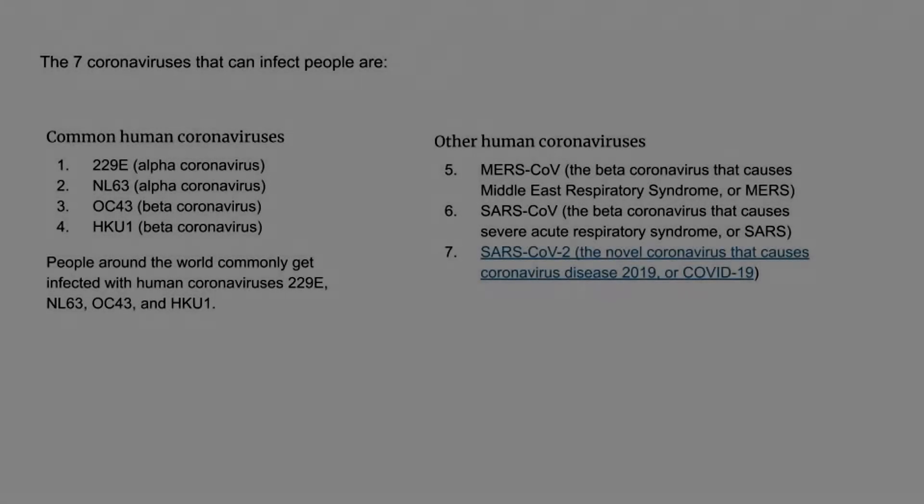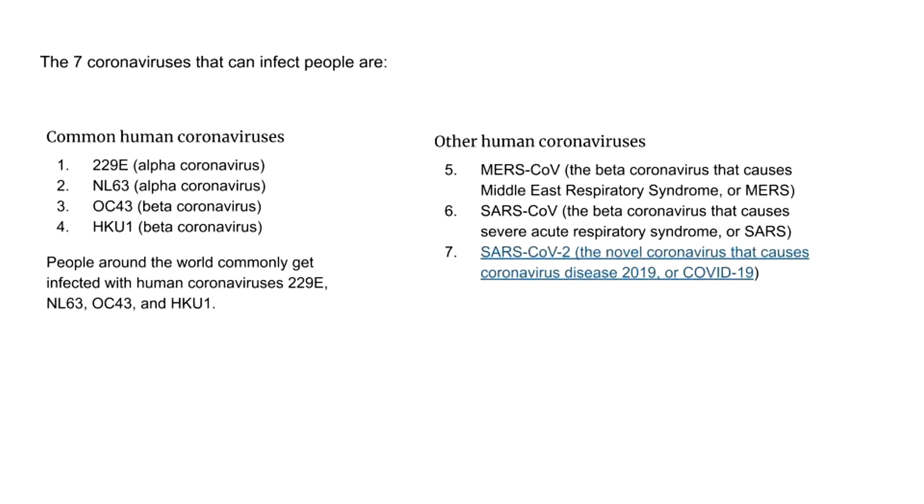Shortly thereafter, the name 'coronavirus,' which came from the crown-like appearance of the surface projections, was chosen to signify this new genus. So if you look at the slides, there are really seven coronaviruses that can infect people.